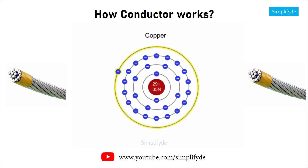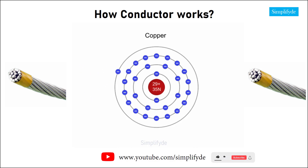the outermost shell of copper is occupied by a single electron. The lone electron is loosely held in its valence orbit and thus can become a free electron. The ability of this electron to freely move away from its nucleus gives the copper atom its current-carrying capacity.